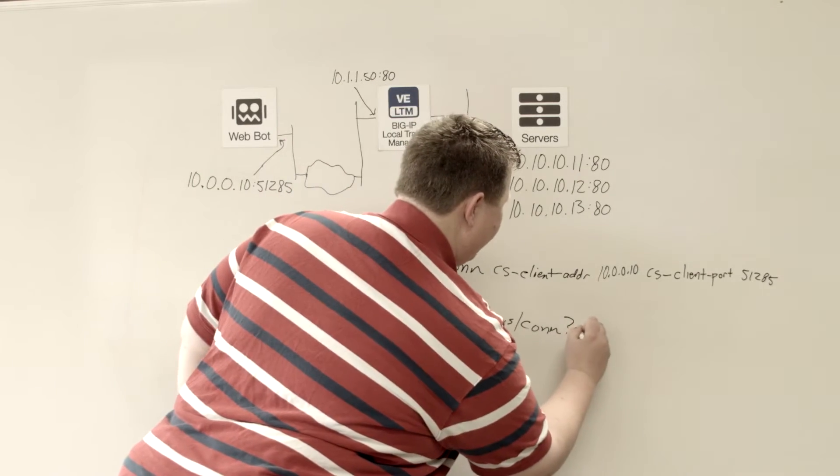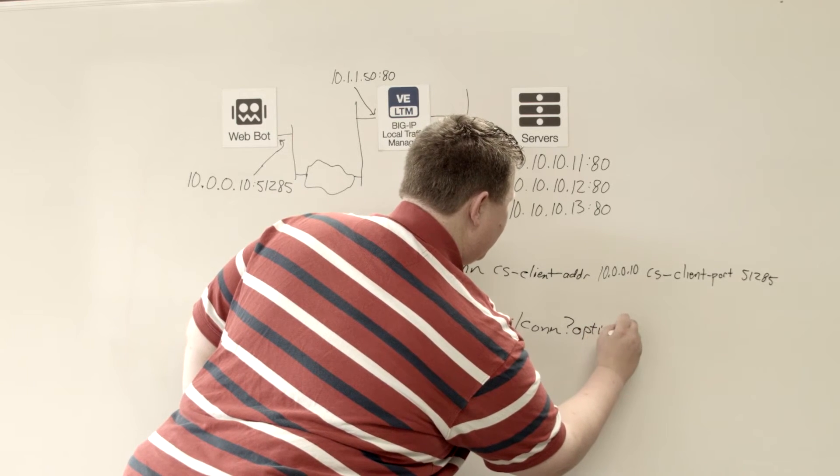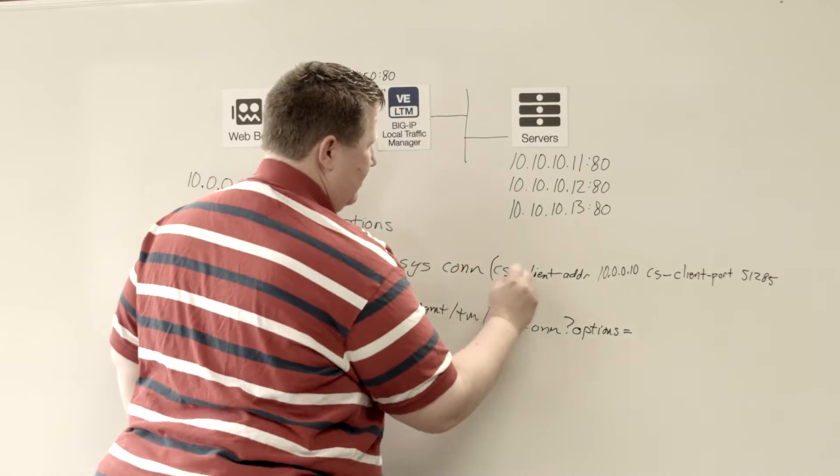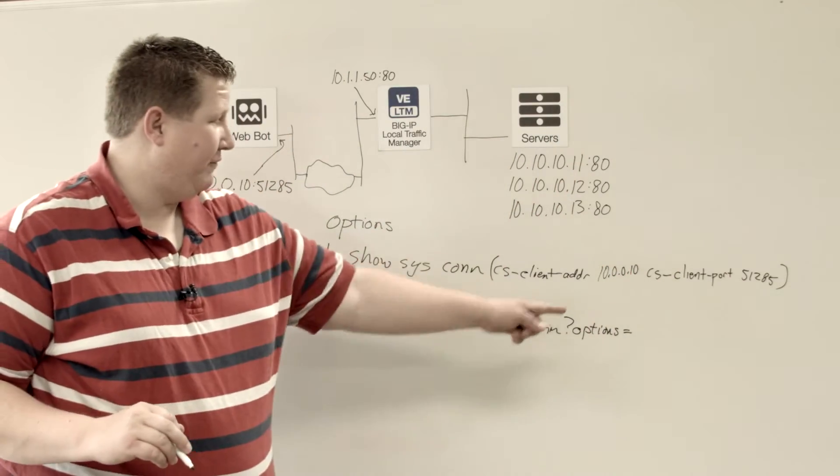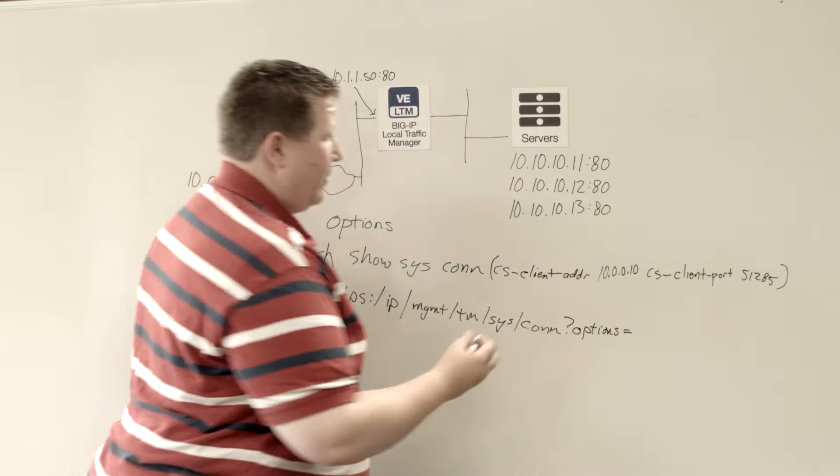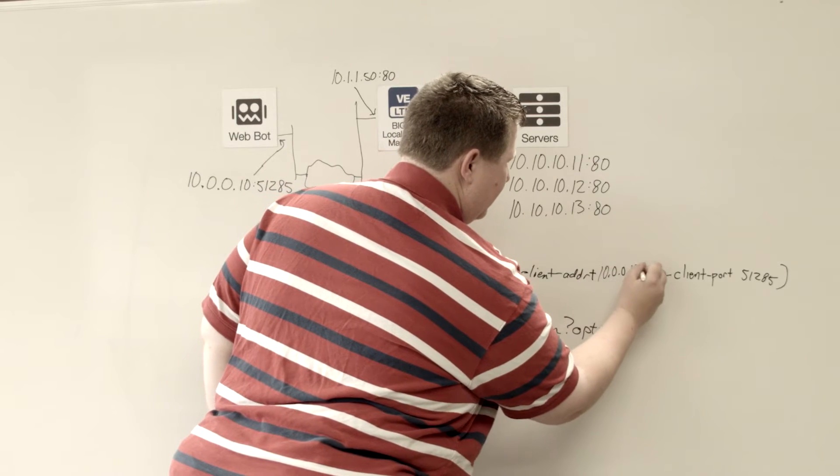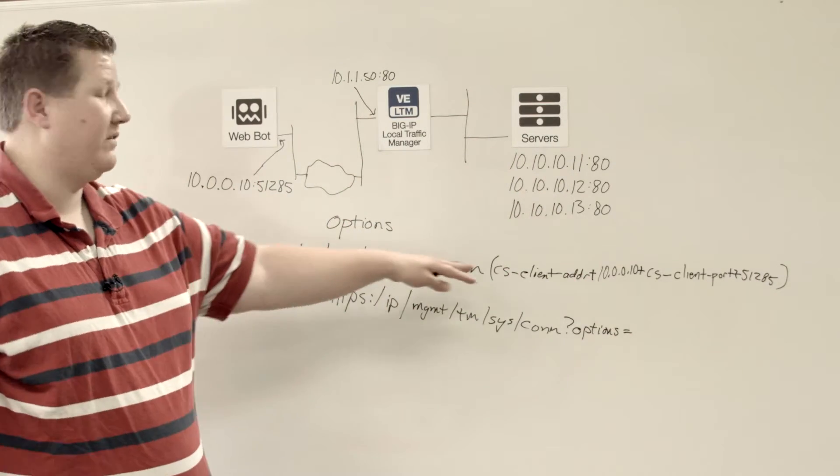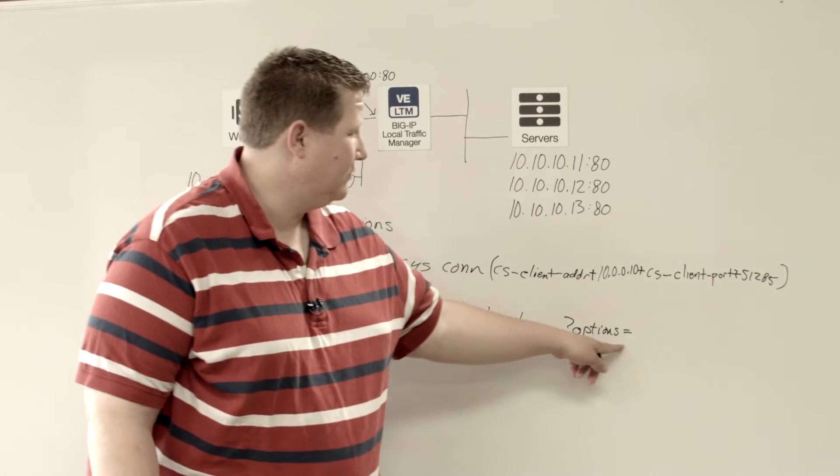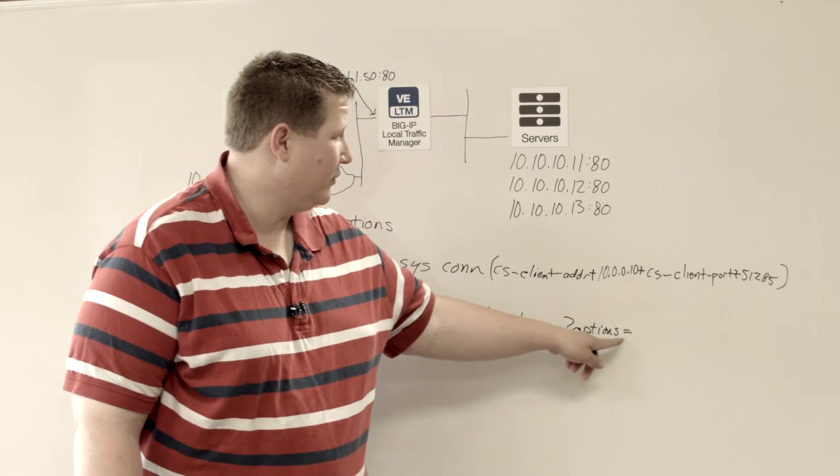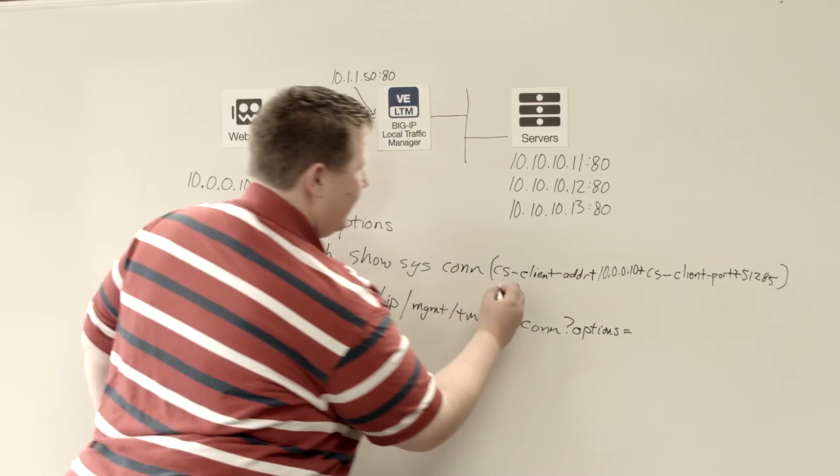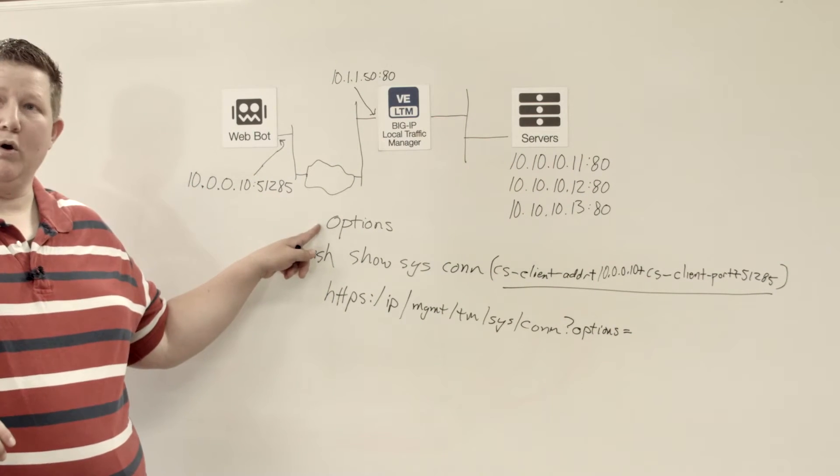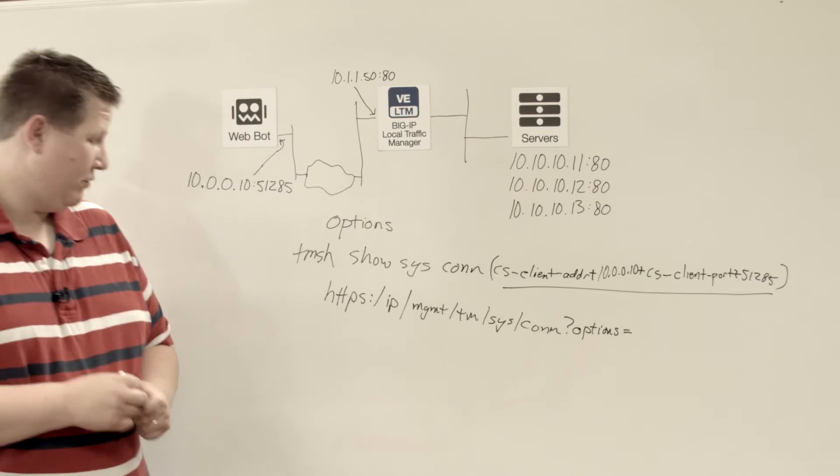So you have your question mark options equal. And then you put this in there after the equal sign. You separate these with a plus. And so you take what is on the command line and that becomes your query parameter, and this is your query value. This becomes your query value. And that's how the options keyword works for the iControl REST API.